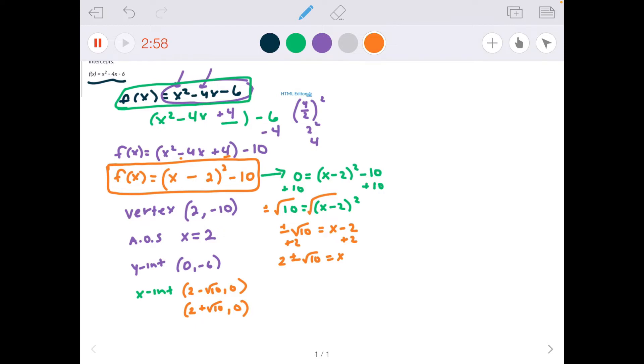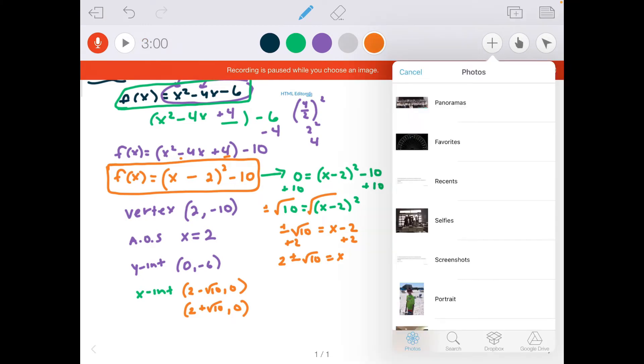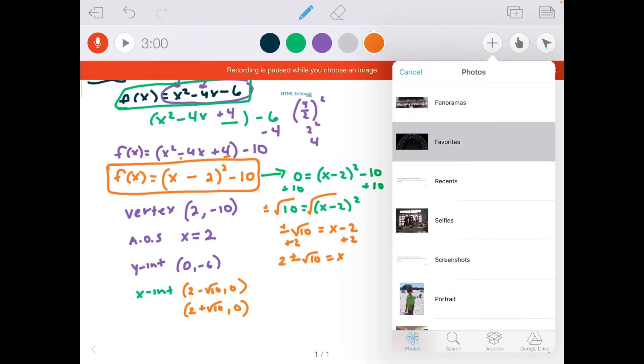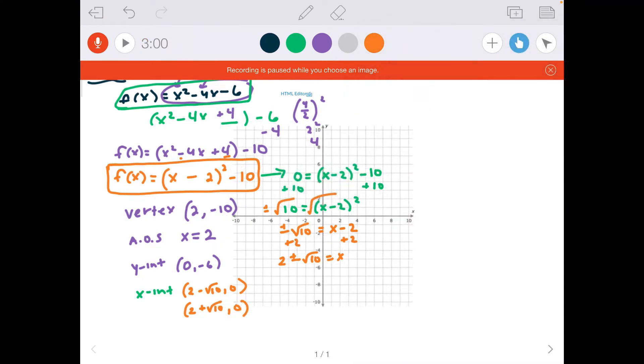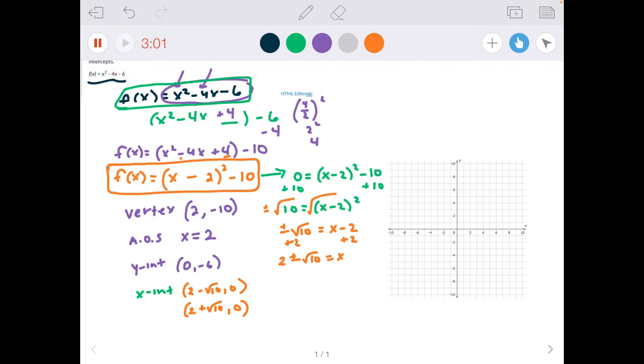Now I've got to graph this. So I'm going to pull in, I have saved in my camera roll a coordinate grid. Now notice my video just paused, so I'm going to hit record again so it continues. I'm going to plot the point that is (2, -10). That's my vertex. I'm going to plot my y-intercept, which is (0, -6).